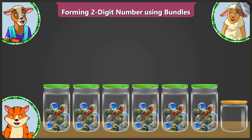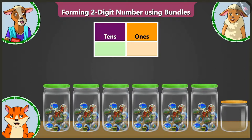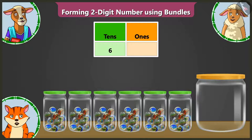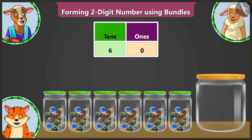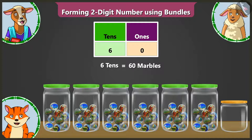Now you tell me, Lily, how many groups of 10s do we have? We have 6 groups of 10 marbles each. That's right. This is why we will write 6 in the 10s box. Now you tell me, Billy, how many marbles are there in the seventh jar? Ma'am, the seventh jar is empty. Yes, there is not even one marble in the seventh jar. So we have to write 0 in the ones box. We have 6 in the 10s box, which means 60, and 0 in the ones box, which means there is not even one marble there. So there are 60 marbles in total.